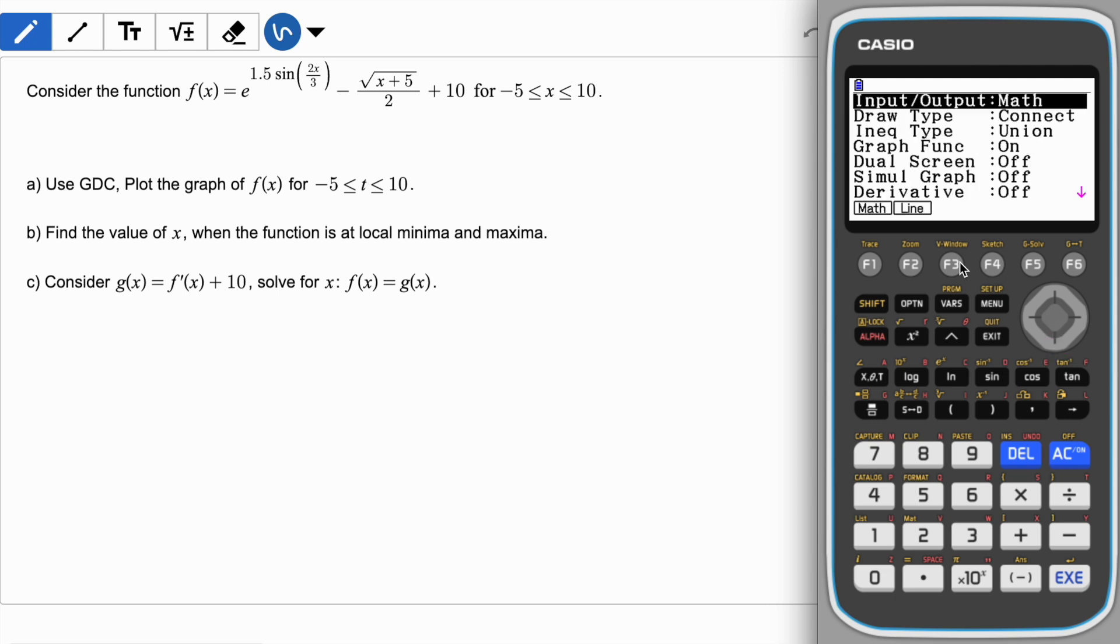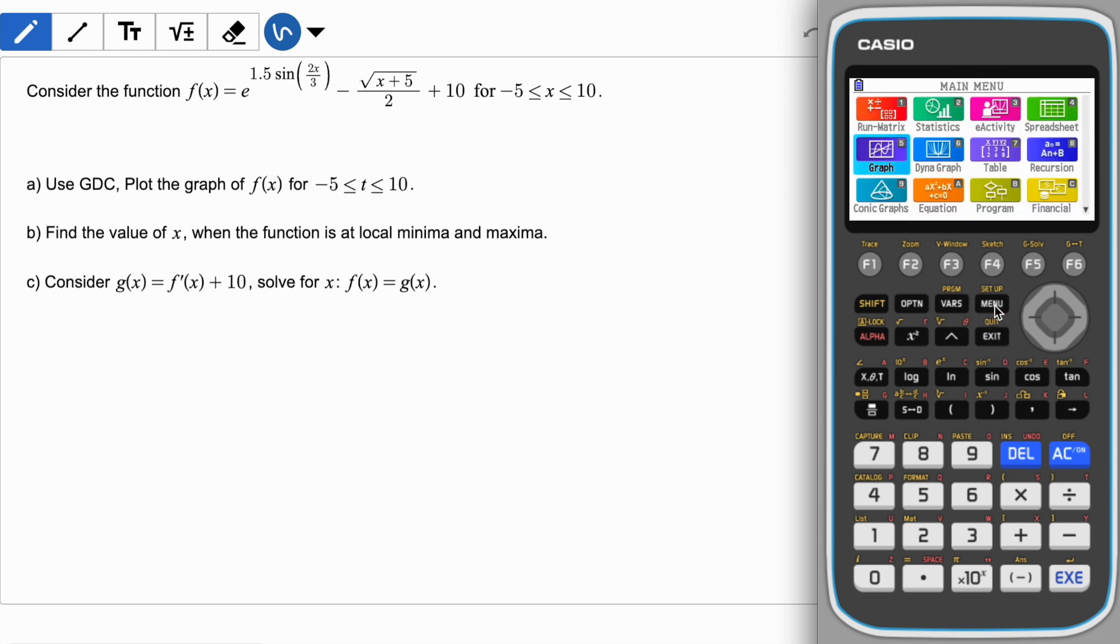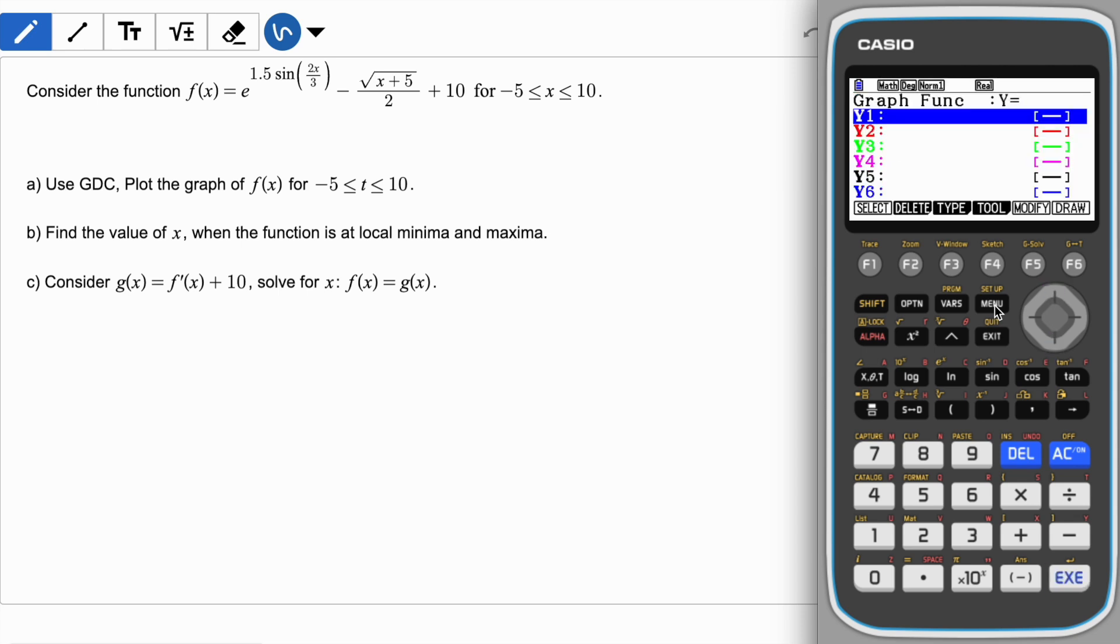These are basic settings. Now once I have checked these settings I'm going to click exit and return on my graph screen, or you can go back to main menu and then go to graph. First thing you should see y1 y2 y3 etc. Now I'm going to enter my function.